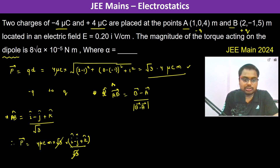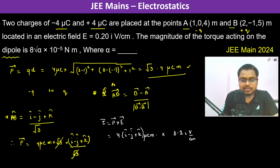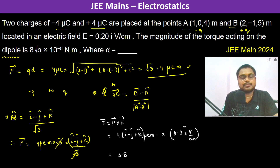Now we find the magnitude of torque, where torque = P × E. So we compute 4(I cap − J cap + K cap) microcoulomb·meters cross 0.2 volt/centimeter in the I cap direction. I cap cross I cap is 0, so that term vanishes. Negative J cap cross I cap gives plus K cap, and K cap cross I cap gives plus J cap.